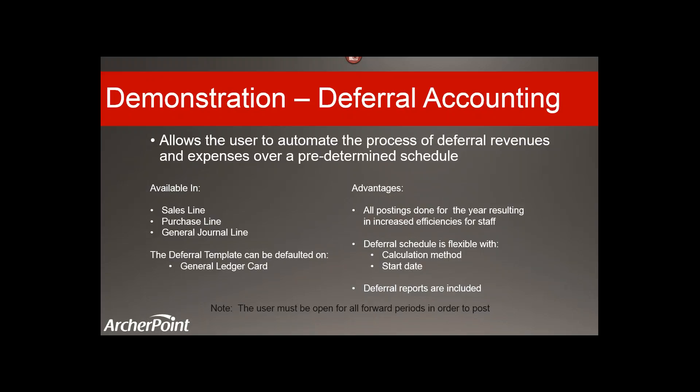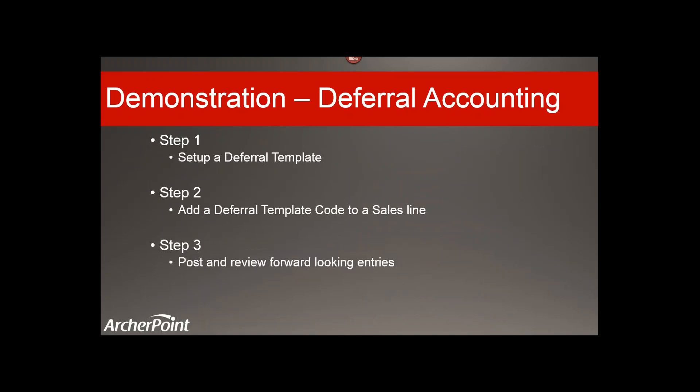The only caveat is that the user must have all forward periods open in order for this to post. So if you were posting in January and making postings for the year, all periods would have to be open for the full year. To demo this, I'm going to do a three-step process: set a deferral template, add the deferral template code to a sales line, and then post and review forward-looking entries.